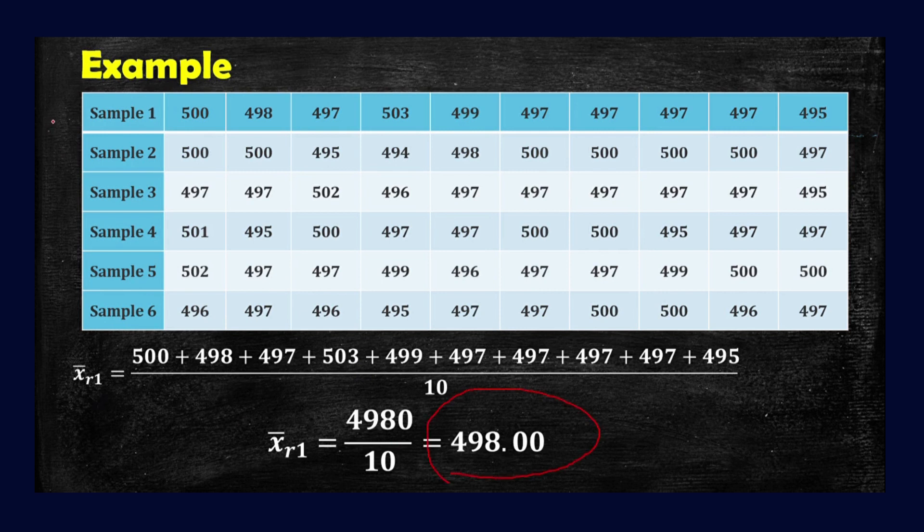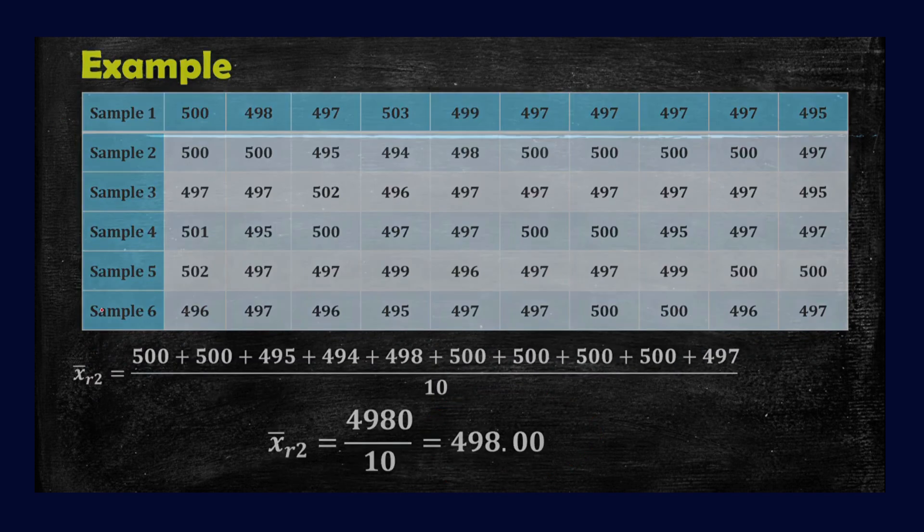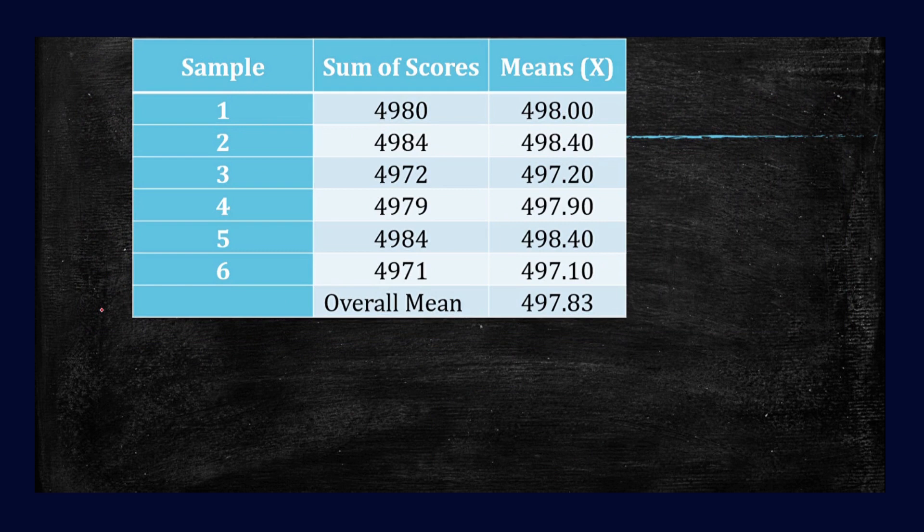So 498 for sample 1. For sample 2 through sample 6, the process is the same—we can obtain these means for each group of samples. For sample 2, when we add all the data, we can obtain 4,984, and 4,984 divided by 10 is equal to 498.40. This one is the mean for sample 2. Now the mean for sample 3 is 497.20. For sample 4, 497.90. For sample 5, 498.40. And for sample 6, 497.10.